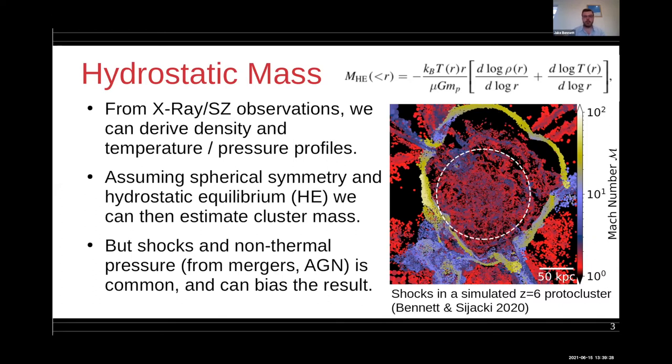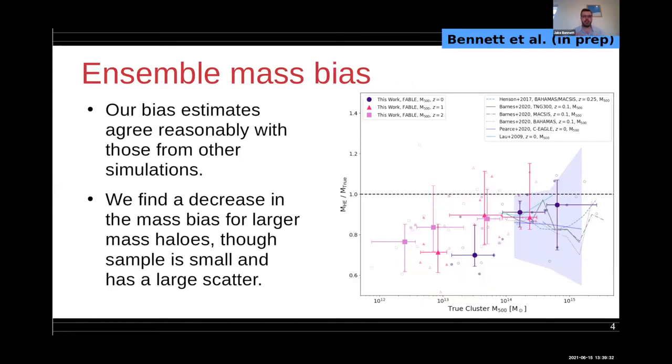We estimate our masses in a similar way to many other works, and we find that our bias estimates for an ensemble average about the whole sample agree reasonably with those from other simulations shown in this ensemble plot on the right.